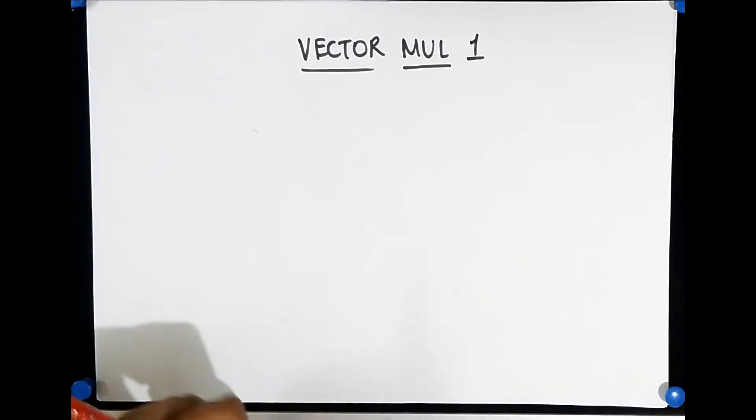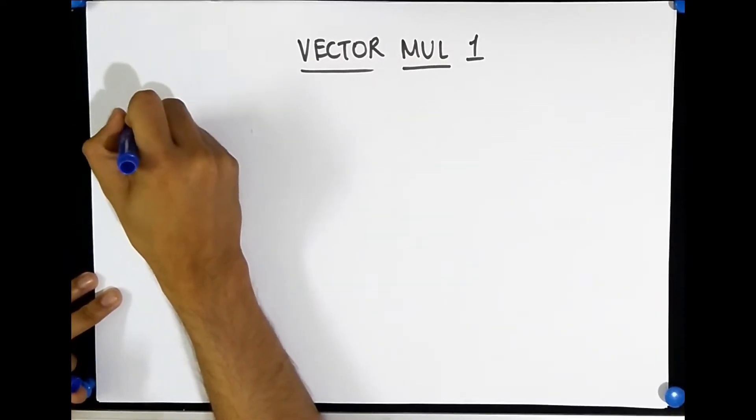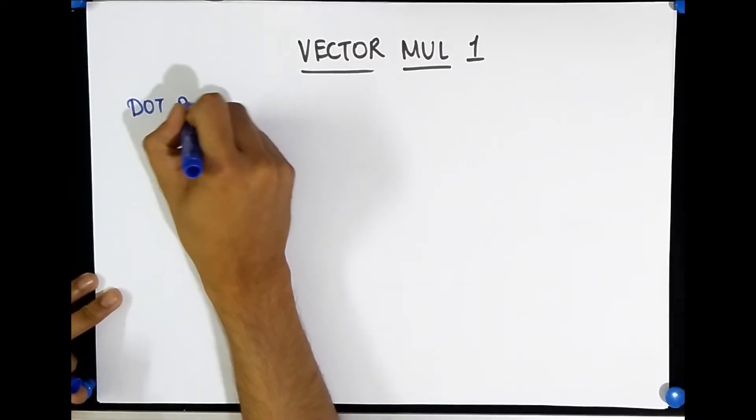When it comes to vectors being multiplied, it's not like normal numbers being multiplied. Turns out there are two kinds of multiplication. The first kind we're going to talk about is called the dot product.